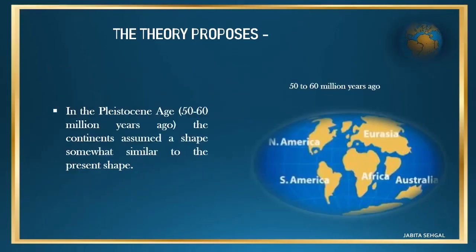In the Pleistocene age, that is 50 to 60 million years ago, the continents assumed a shape somewhat similar to the present-day shape.